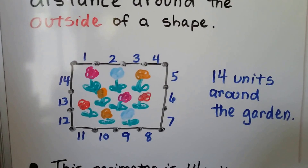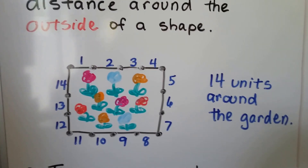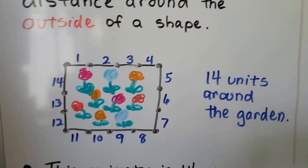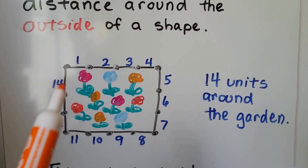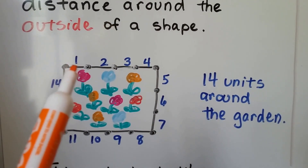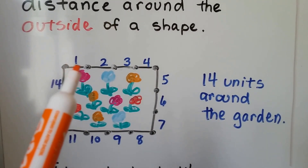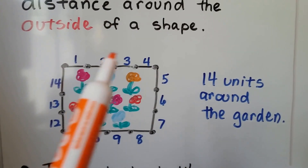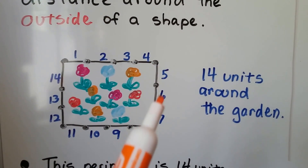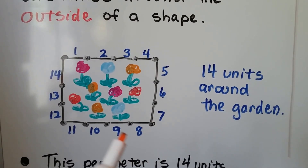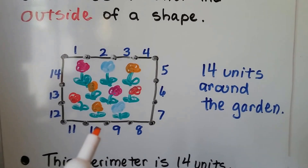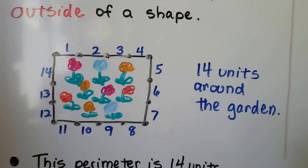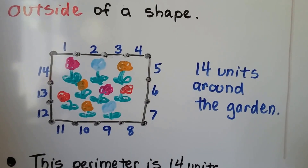We have a garden here, and if we wanted to know how much fence to buy to go around the garden, we could count the units. Each little line in between the dots is one unit. Counting around: 1, 2, 3, 4, 5, 6, 7, 8, 9, 10, 11, 12, 13, 14 units are around this garden.